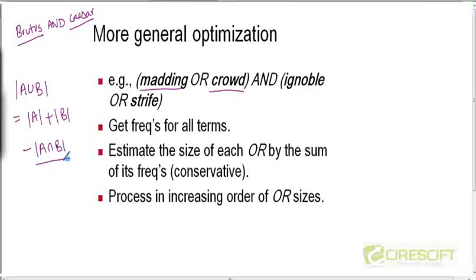But because we don't know what this intersection is unless we actually calculate it, if we are just given the length of A and the length of B as given by the document frequency field, the best possible estimate that we can come up with for the OR result is the sum of the lengths of the two postings lists.